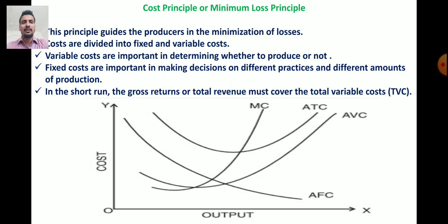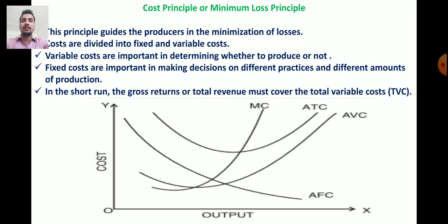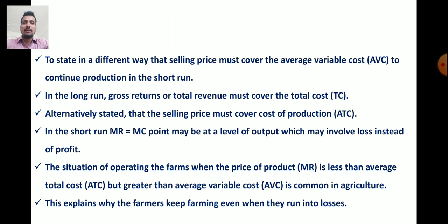Fixed costs are important in making decisions on different practices and different amounts of production in the short run. In the short run, the gross return or total revenue must cover total variable costs. In the figure, the x-axis represents output and the y-axis represents cost, showing curves of marginal cost, average total cost, average variable cost, and average fixed cost.